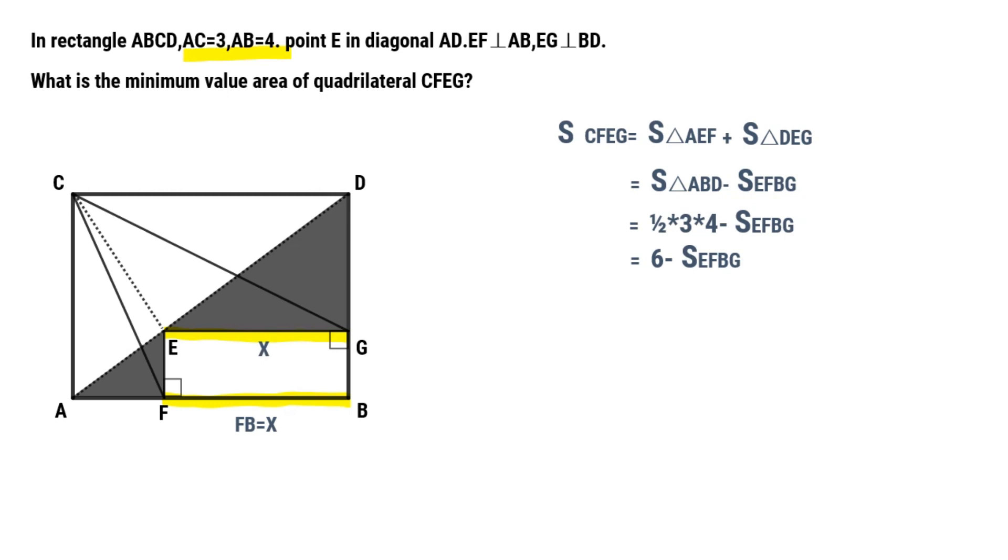Then focus on segment DG. Because EG is parallel to AB, the ratio of DG over EG is 3 over 4. So DG is 3/4 times X, and BG is 3 minus 3/4 times X.